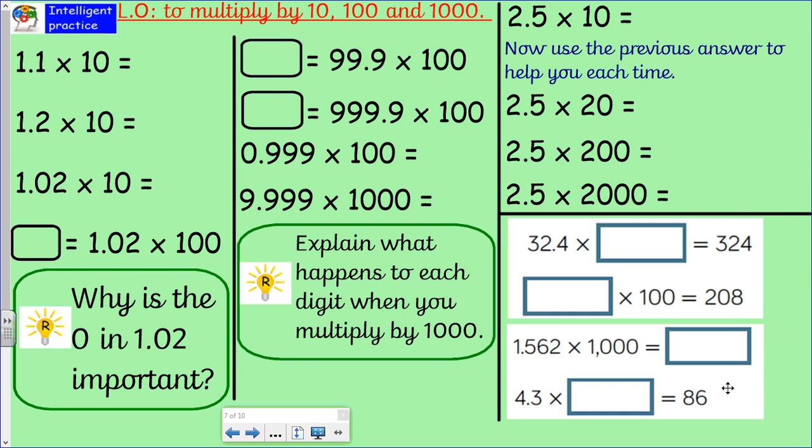All right, finally, into this one. Now this is a little bit trickier. So you've got to work out what 32.4 has been multiplied by. Again, think about your objective. This one, think carefully. I'm going to say the word inverse and leave it there.